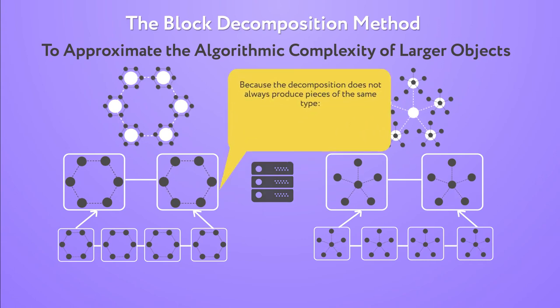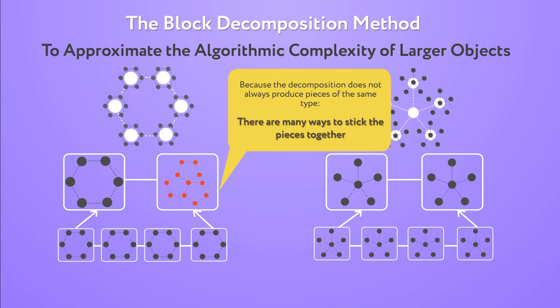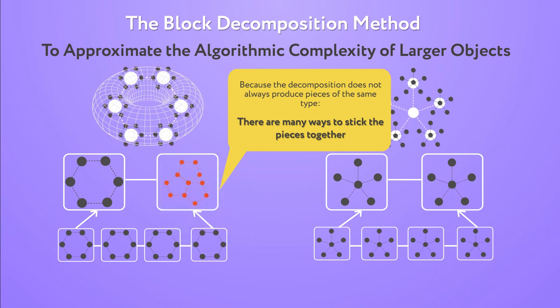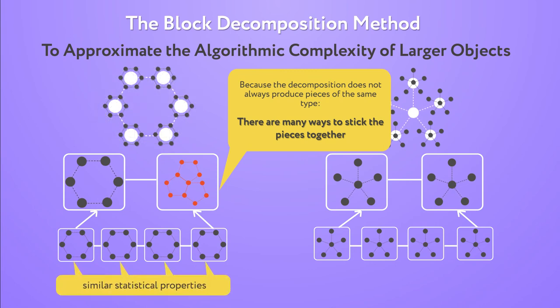Because the decomposition does not always produce pieces of the same type, there are many ways to stick the pieces together, such as overlapping the pieces, embedding the original object in a topological torus, or assigning similar algorithmic complexity to objects that have similar statistical properties.